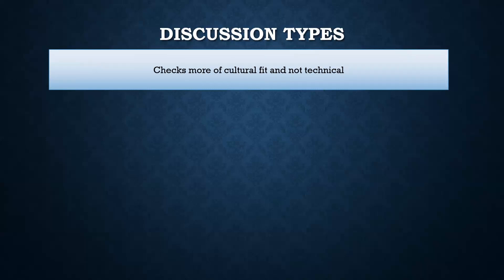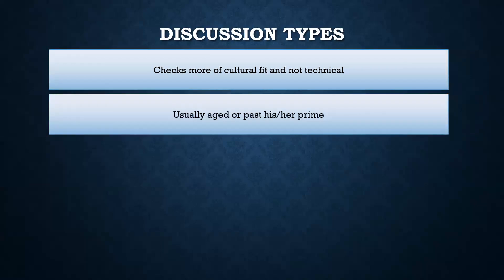Discussion type interviewers usually check for cultural fit and not technical knowledge. Usually they are the people in the second or third round — they believe the first round interviewer has already checked that you are technically good, so the only thing they need to check is cultural fit. Secondly, they are often past their prime — at one point they may have been very good in profit or modeling, but right now they have forgotten everything and haven't kept on learning. Even if they wanted to, they could not ask you many technical questions. They would try to have a discussion — understand your personality, your experience area, what areas you've worked in in the past, or if you're a fresher, what subjects you like — overall personality and thought process.